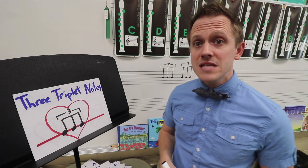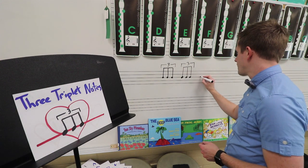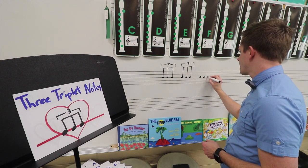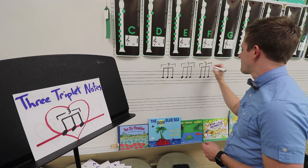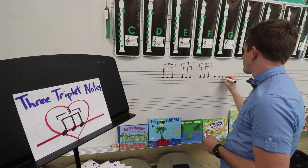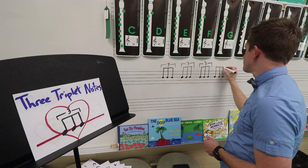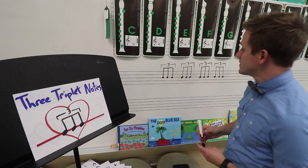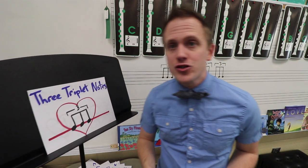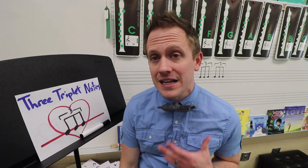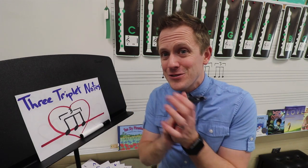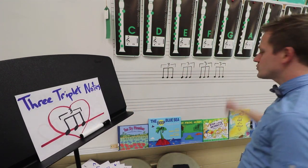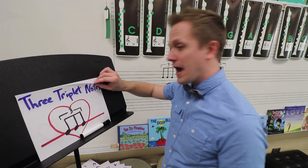What's special about triplet notes is when you write them out: you do your note head, your stem, and only one bar, but over the top you have to put the number 3. If you really want to get fancy, you add brackets. That's how we notate triplets — squeezing three slightly shorter notes into one beat instead of two eighth notes. Triplets are kind of fun to perform. The way I do it is: triplet, triplet, triplet, triplet.